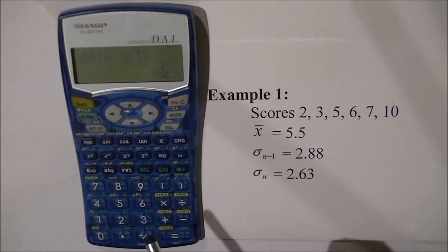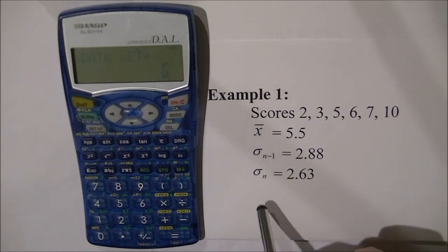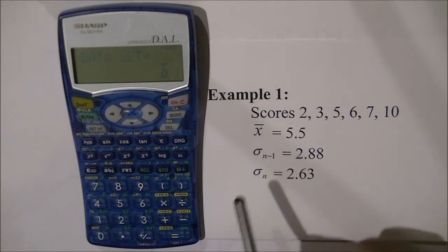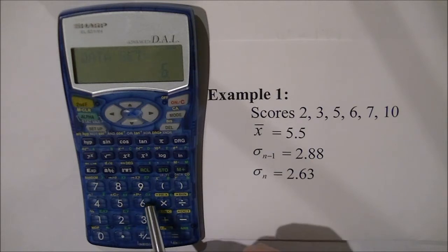So now what we're going to do is we're going to find the mean, the sample standard deviation and the population standard deviation and each of these is located on the keys 4. Above the key 4 you see a little x with a line, above the key 5 you see a little green sx and above the key 6 we see a little green sigma x.